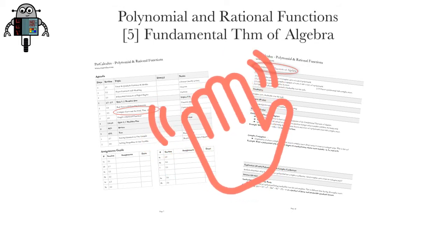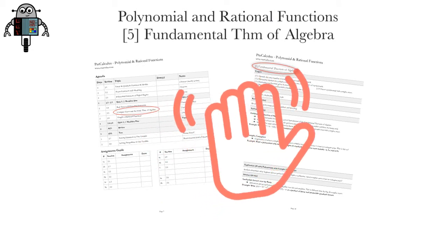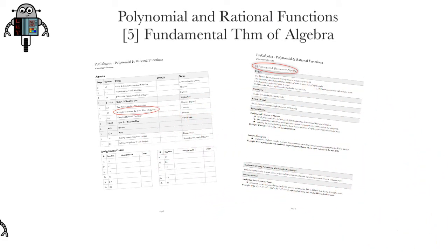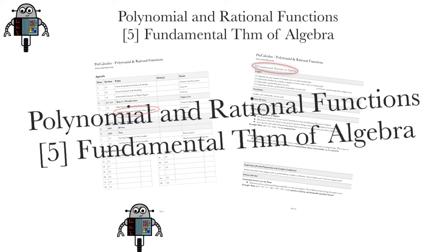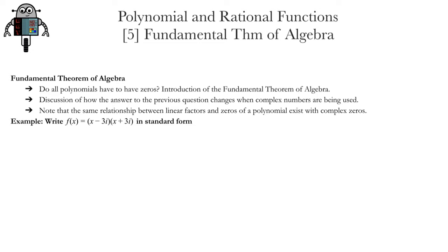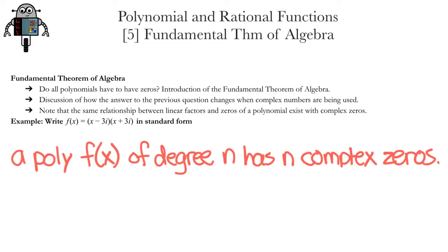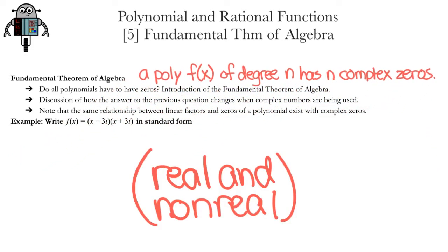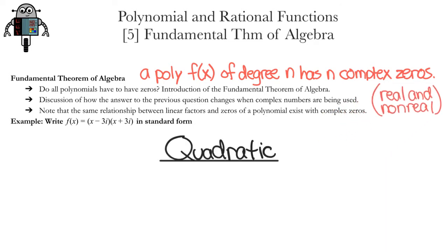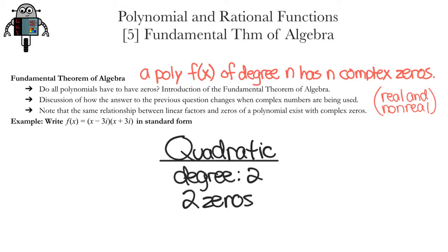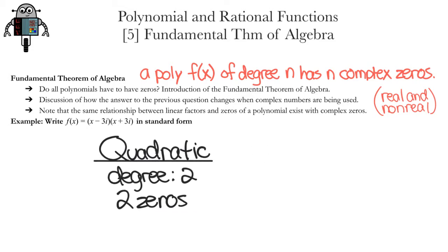Let's get complex! You may have noticed that I emphasized the Fundamental Theorem of Algebra three times. Well, here it is. It says a polynomial function of degree n has n complex zeros, real and nonreal. That means if we have a quadratic function, a polynomial with degree 2, then we should expect there to be two zeros. Multiplicity applies as well.